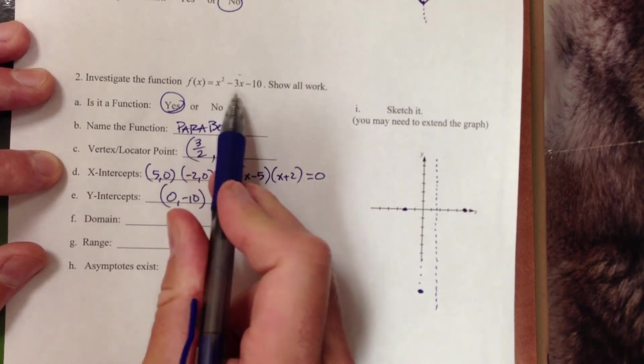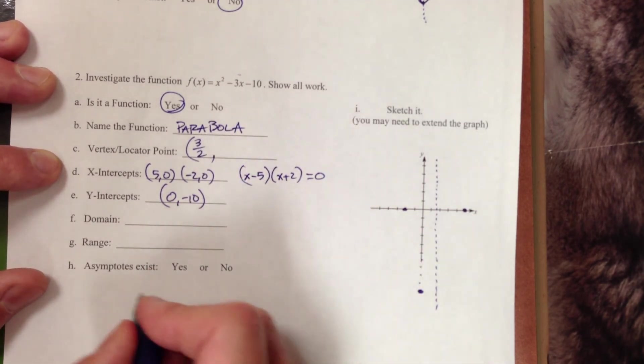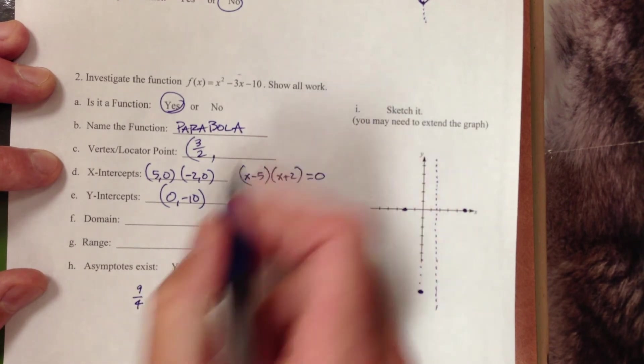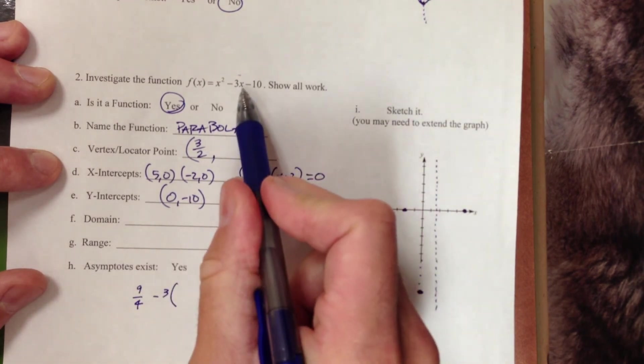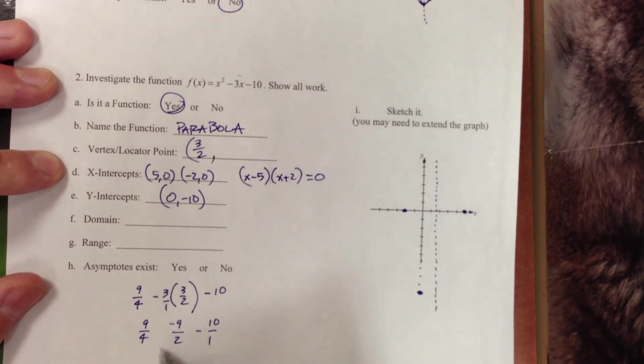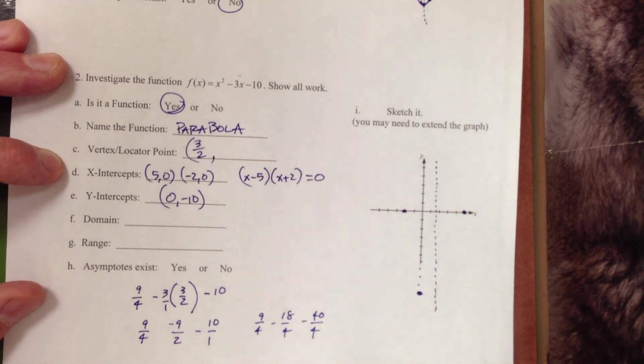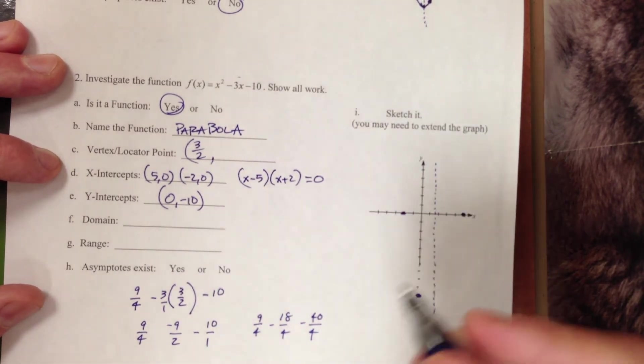So if I take 3 halves now and plug it into my function, I can find the y value of my vertex. So 3 halves squared, that is 3 halves times 3 halves, which gives us 9 fourths. Minus 3, substitute in my 3 halves, minus 10. Straight across here, negative 3 times 3 would be negative 9. 1 times 2 would give me 2. Bring down my 9 fourths. Bring down my 10. We need a common denominator here, so I multiply both by 2. I have 9 fourths, minus 18 fourths, minus 40 fourths. If I combine all these together, I'm going to end up with my value of negative 49 fourths.